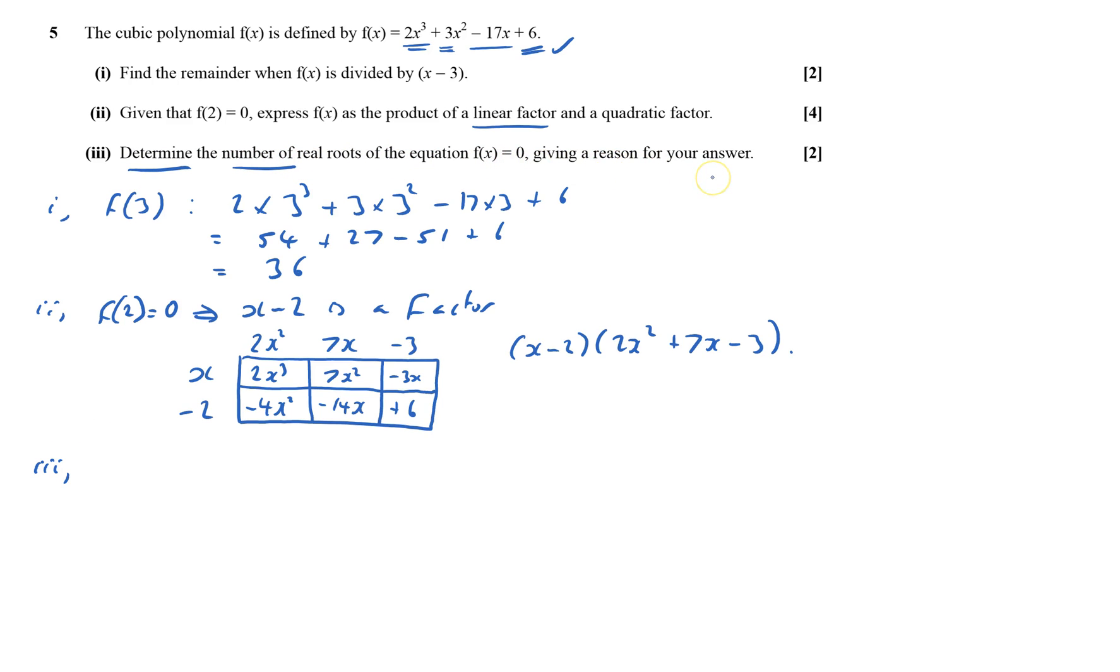Well, that's one root, one real root. And the discriminant of this bit is b squared minus 4ac. B squared is 49 minus 4 times by the a is 2 times by the c is negative 3, and that equals...